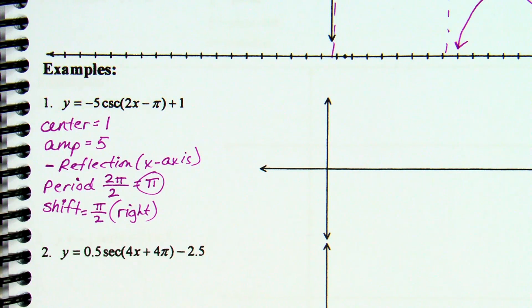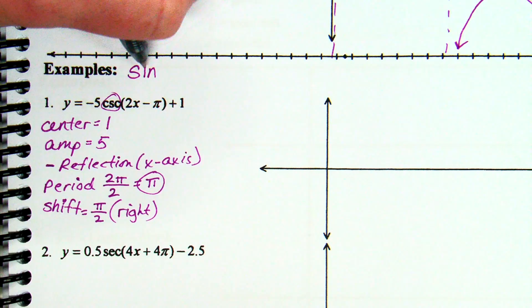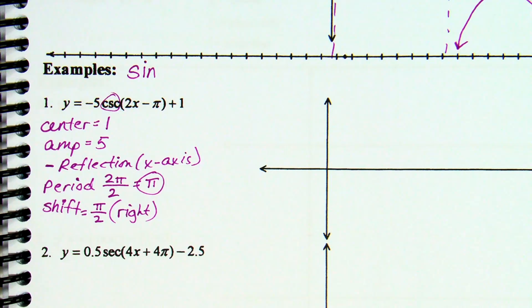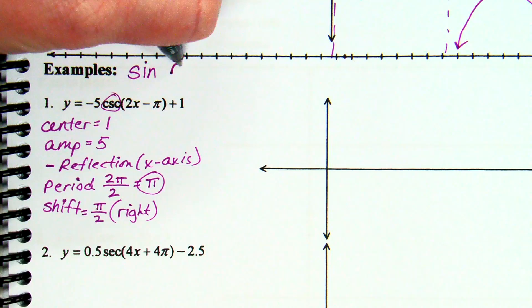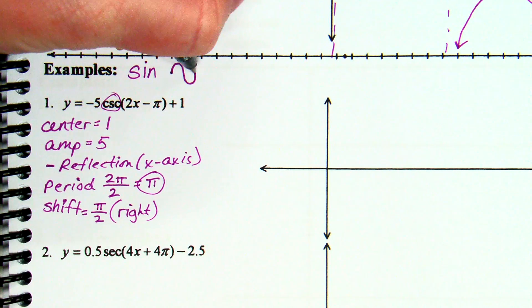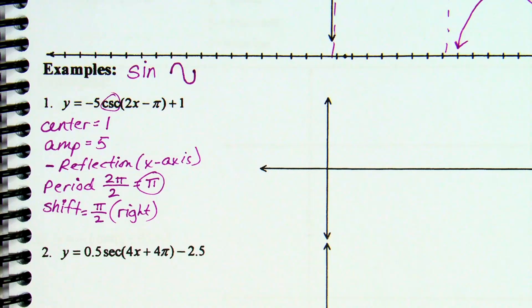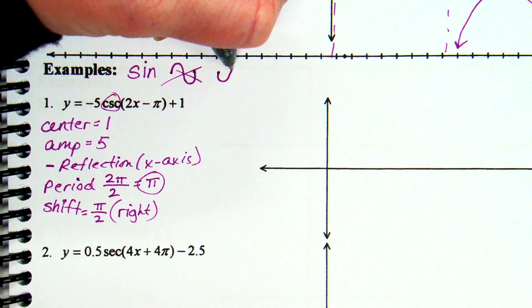It's cosecant, so we're going to have to think sine. What's a normal sine graph look like? Starts at the origin, goes up, goes down, ends at the x-axis. This one has a reflection, so instead we're still going to start at the origin, but we're going to go down, then up, and end at the x-axis again.